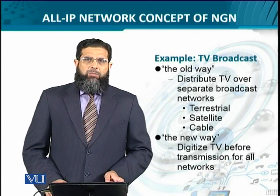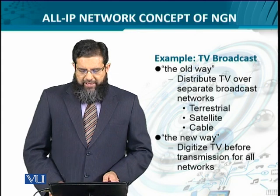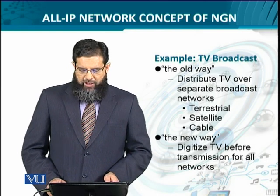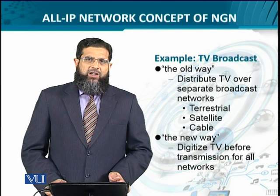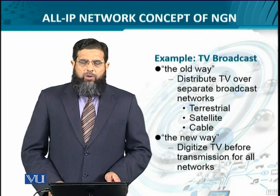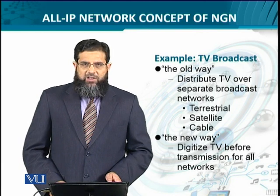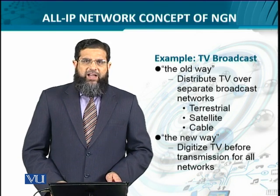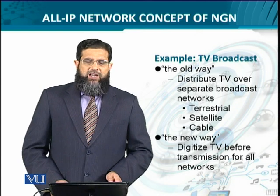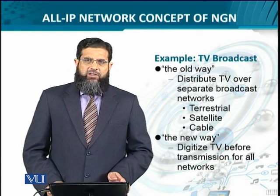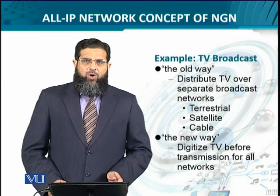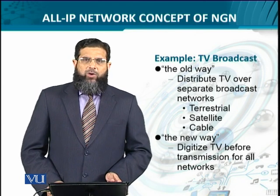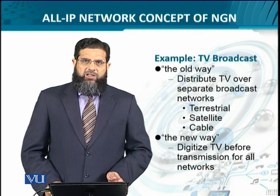Let's look at an example of TV broadcasting. In the traditional way, TV transmission was distributed over separate networks to meet different customer requirements. For instance, we had terrestrial television — typical TV broadcasting — then satellite TV, or dish television, and then cable operator-based TV channel distribution. What is common to all of them? They all use the TV color carrier and audio carrier, with a spectrum of 6 MHz — so it was analog transmission.